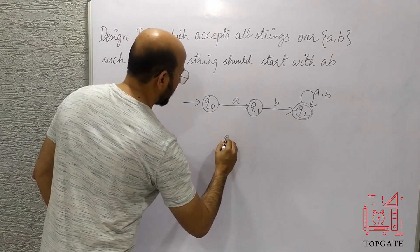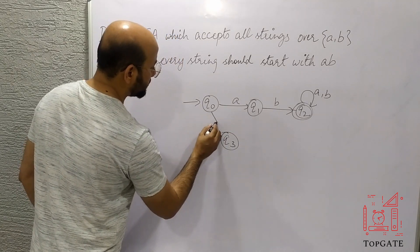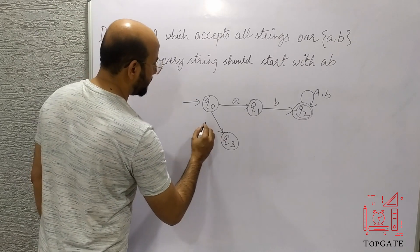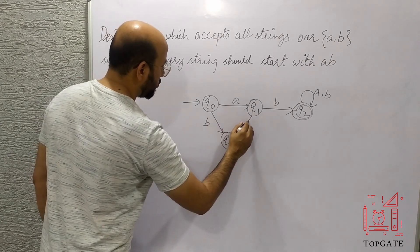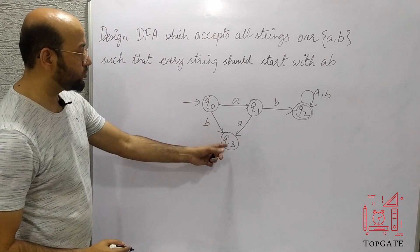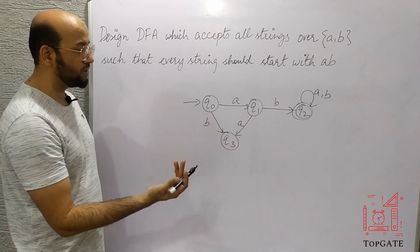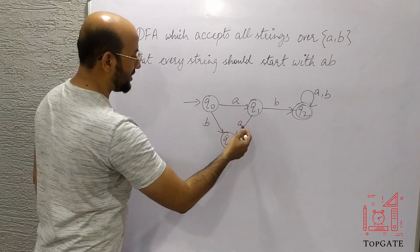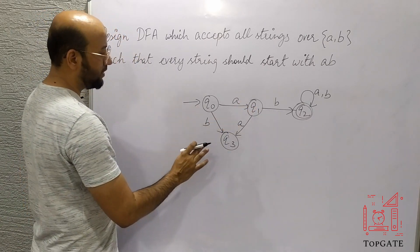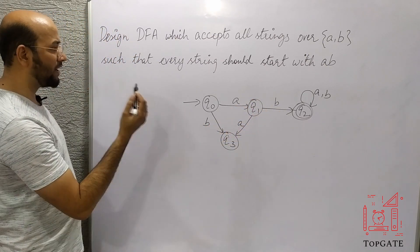So I'll introduce a dead state q3: connect q0 to q3 on 'b', and connect q1 to q3 on 'a'. I also add a self-loop on q3 for both 'a' and 'b' so that anything reaching q3 stays there and gets rejected. All transitions are now defined for every state, and we're done with the DFA.